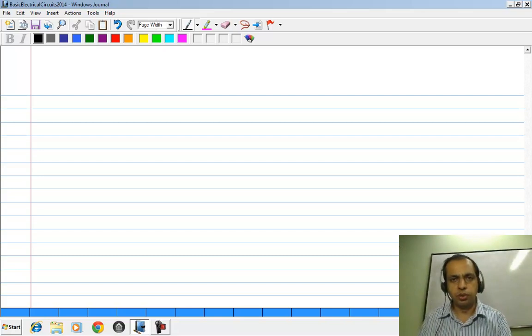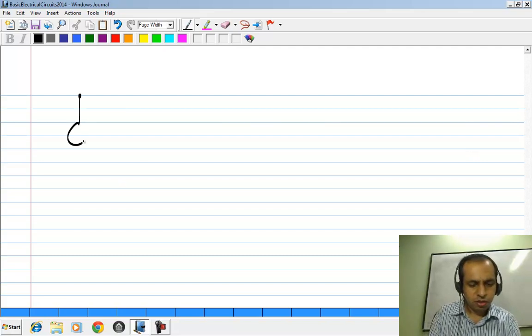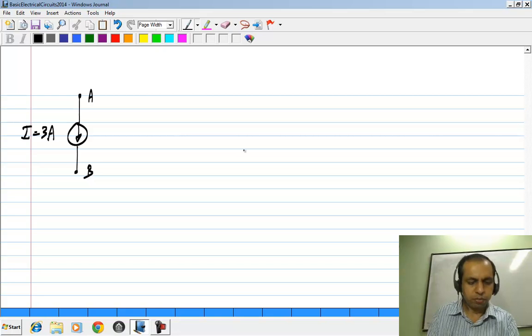As with the voltage source, we depict the characteristic of a current source graphically. Let us take a current source of value 3 amperes, and the voltage is defined in this direction according to passive sign convention.